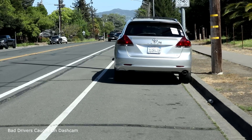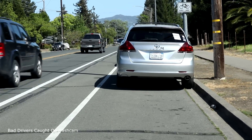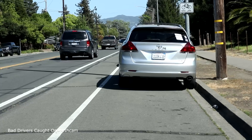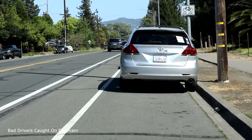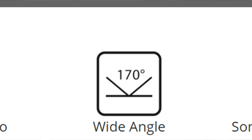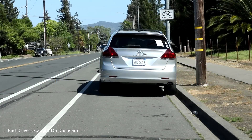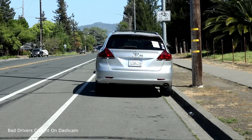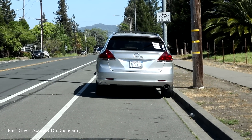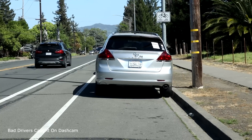Hey everybody, this is a video to show how the human eye sees things versus how the wide-angle lens on a dash cam sees things. My dash cam has a 170-degree wide-angle lens. The human eye has about a 43mm focal length, and I have my camera set to 43mm focal length.